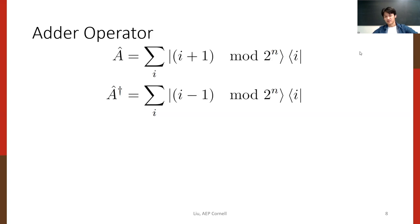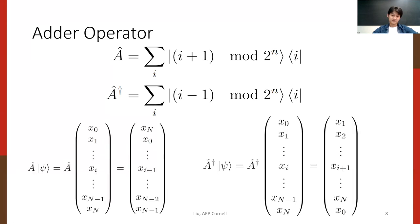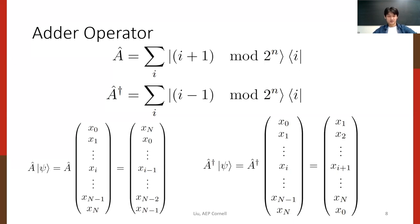This is where we introduce the adder operator. Applied to a quantum vector, it shifts the state up or down by one — moving the amplitude of the i-th state into the (i+1)-th state. And as mentioned, we'll inherently have periodic boundary conditions.